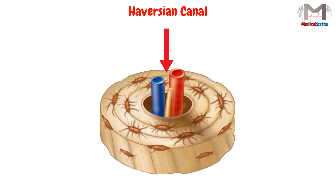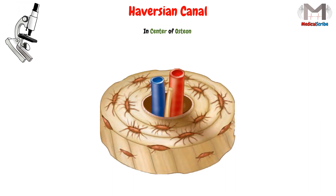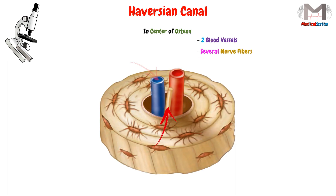This Haversian Canal, which is located in the center of the osteon, is a microscopic structure, and it contains in general two blood vessels, or two capillaries, and several nerve fibers. What they do is to communicate and nourish the bone cells, or the osteocytes, which are inside this osteon.